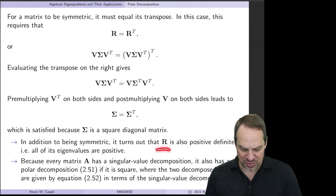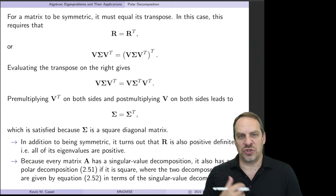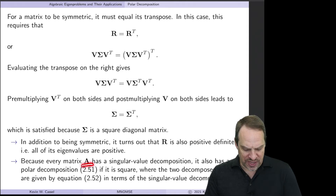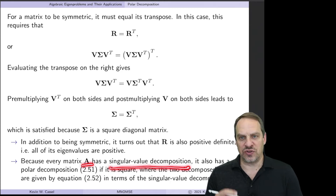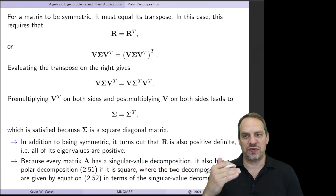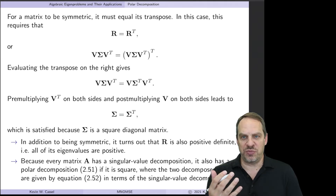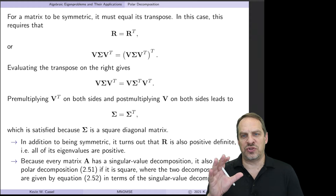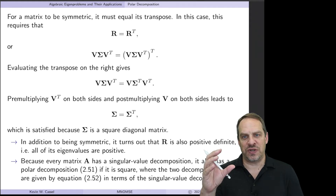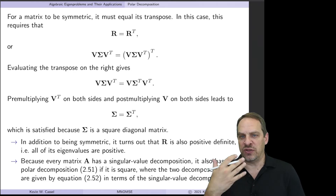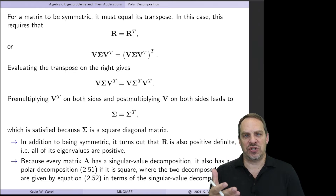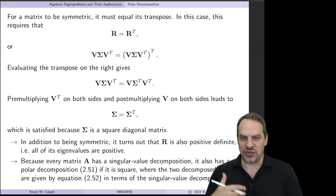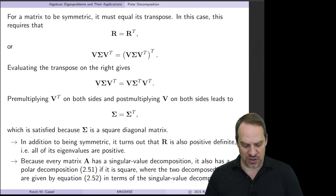Any real square matrix A can be decomposed as the product of an orthogonal matrix and a symmetric matrix. It also turns out that R is positive definite, which means all of its eigenvalues are positive. Now remember that any matrix A has a singular value decomposition, and so because the polar decomposition is just a special case for square matrices, every square matrix also has a polar decomposition of this form. We don't want to have to compute the full SVD to perform the polar decomposition, so let's see how we can get W and R directly.